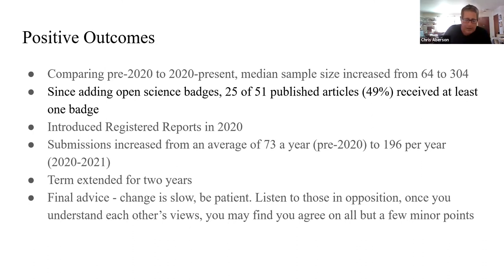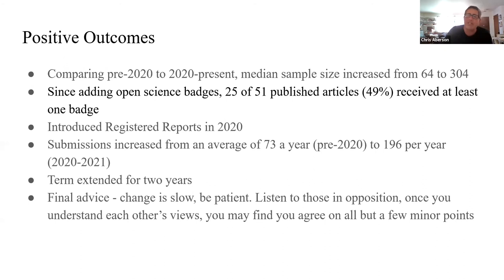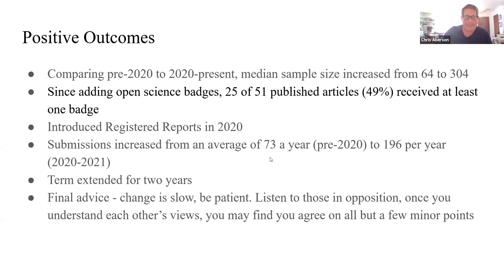Anecdotally, some authors have told me that they selected us over other relevant journals because we were the only ones that promoted open science. What happened to my term? My term was about to end, but I was extended for two years on the urging of that person who was most negative about open science — they had really become a champion of my work. Change is slow; be patient. Listen to those people in opposition and talk to each other. Understand each other's views, like I did with the anti-open-science person. We found that we agreed on almost everything — there were just very minor differences. So really do try to keep that dialogue open.